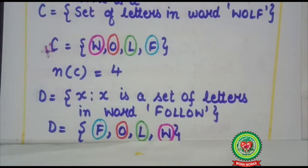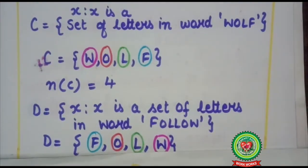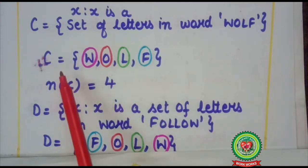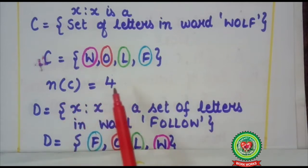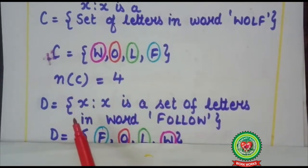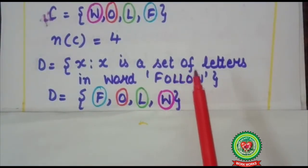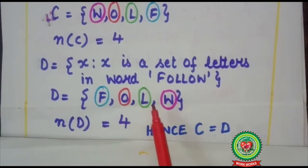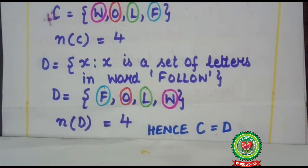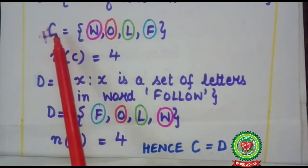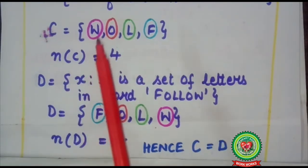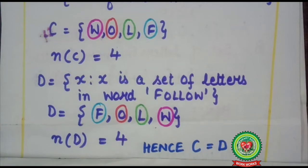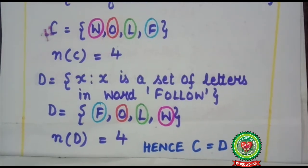Let's take one more example. Here C is a set {X such that X is a set of letters in the word 'wolf'}, given in set builder form. Writing it in roster form, C = {W, O, L, F} and the cardinal number of C is 4. Here D is another set {X such that X is a set of letters in the word 'follow'}. Set D in roster form is {F, O, L, W} and the cardinal number of D is also 4. We observe that C and D have the same elements and the same cardinal number, which implies that set C is equal to set D.